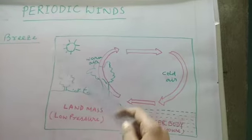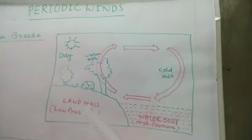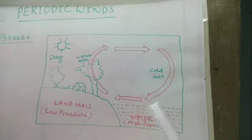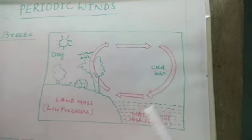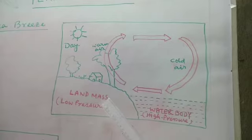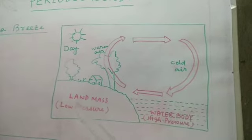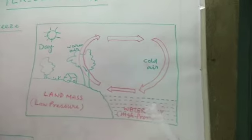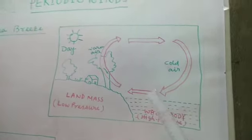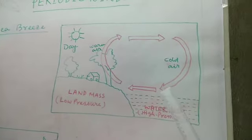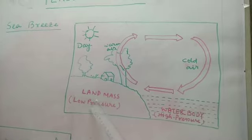Here is the Sun, meaning this is a scenario of daytime. In daytime, the land heats up quickly, so there is a low pressure zone over the landmass. In the case of the water mass or water body, there is a high pressure zone. Wind always blows from high pressure to low pressure, so in daytime wind always blows from the sea or water surface to the land surface.